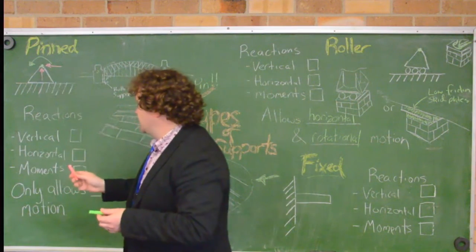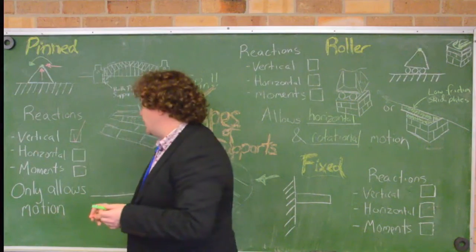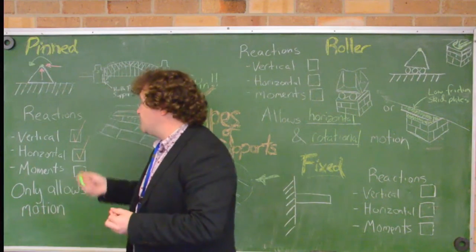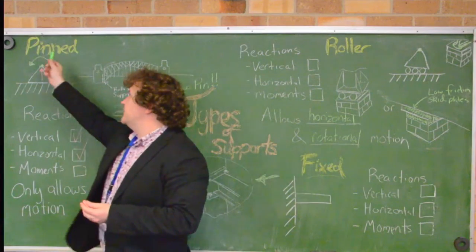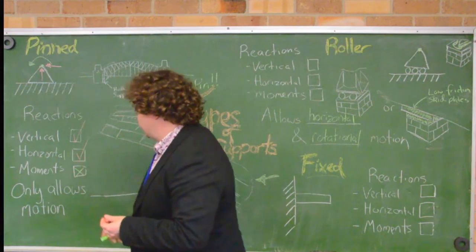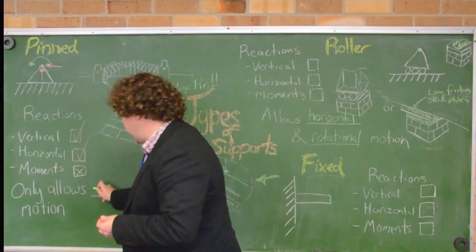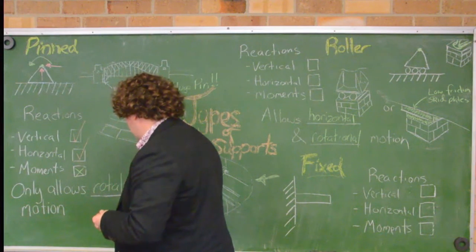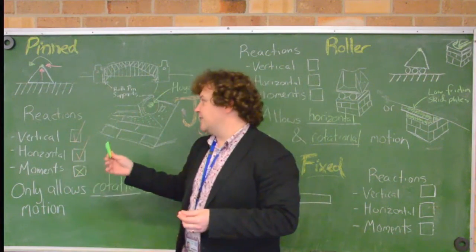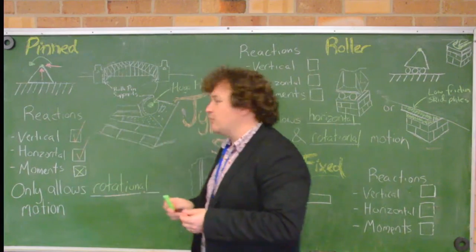So anything that's not occurring here is going to be something that we need to think about as a reaction. So it's not able to go up and down. So it is going to have a vertical reaction, quite likely. It's not able to go left and right. So it is going to have a horizontal reaction, quite likely. Now, a moment is like a twist and bend. It is able to twist or to rotate. So it's not going to be able to have a moment. Because a pin joint only allows rotational movement or rotational motion. A pin joint only allows rotational motion. It resists or reacts to horizontal or vertical motion. So that means that it has reactions for the horizontal and vertical motion.